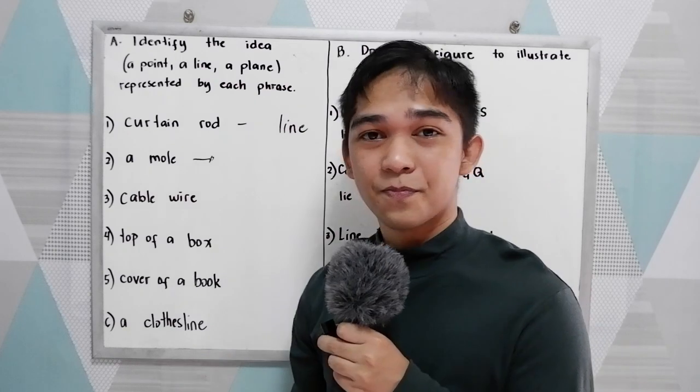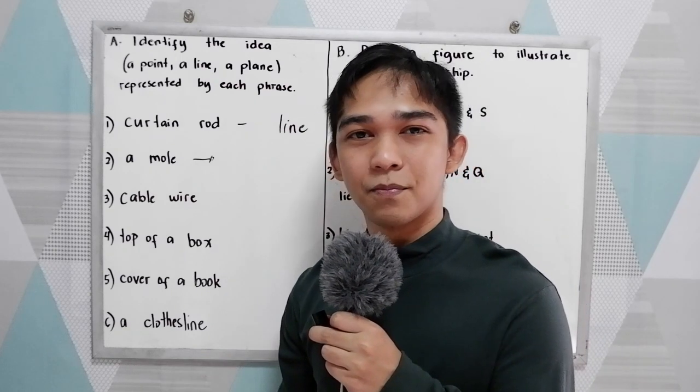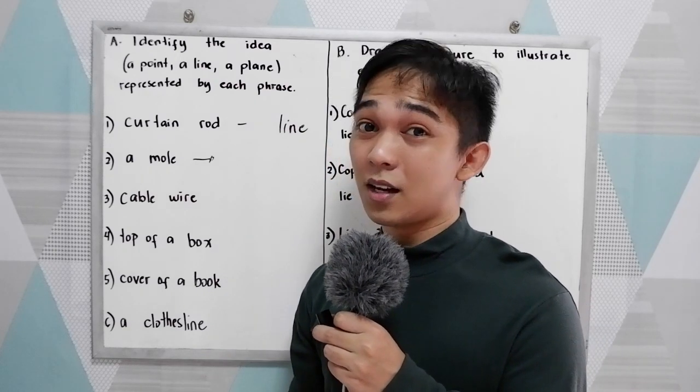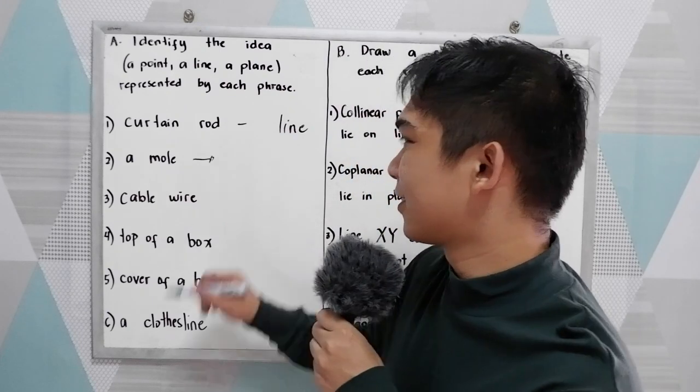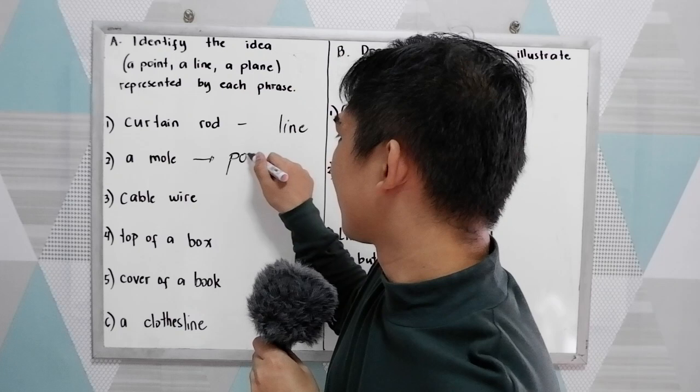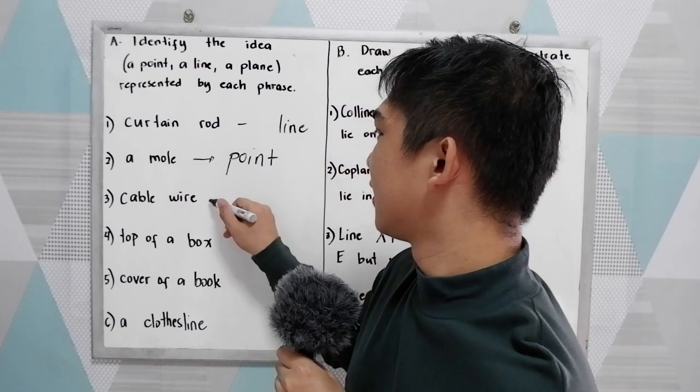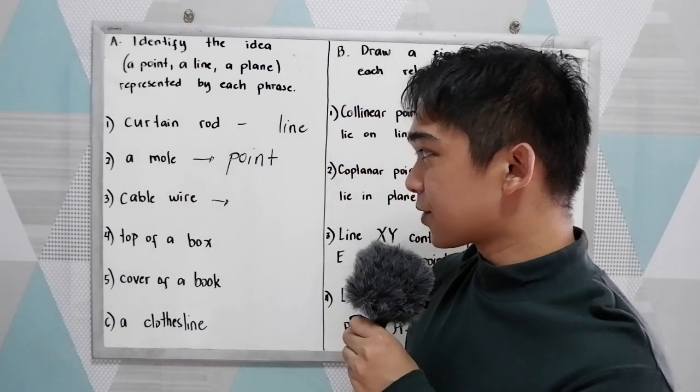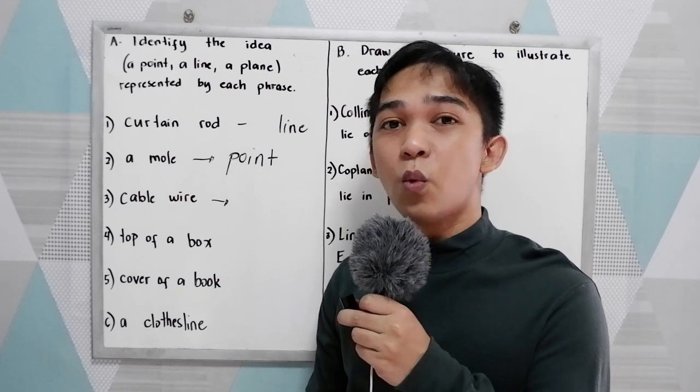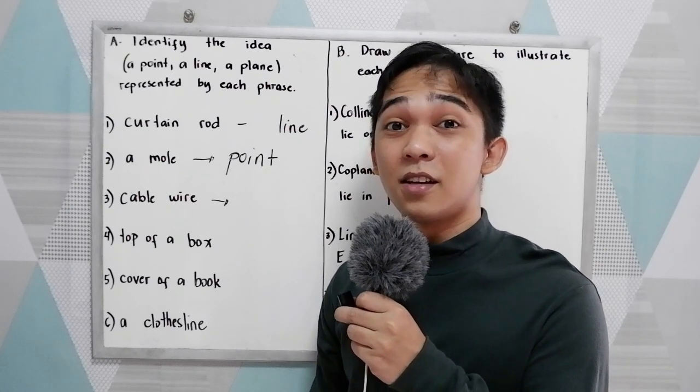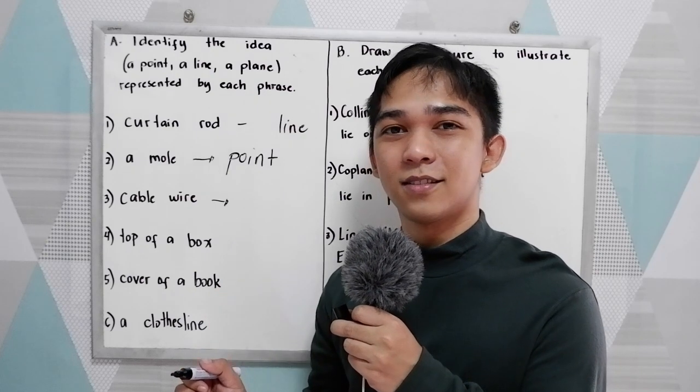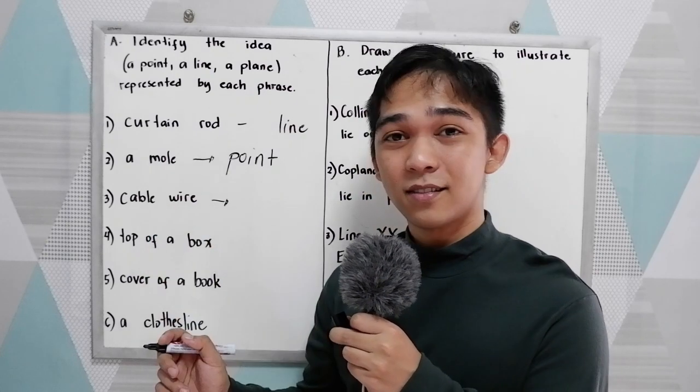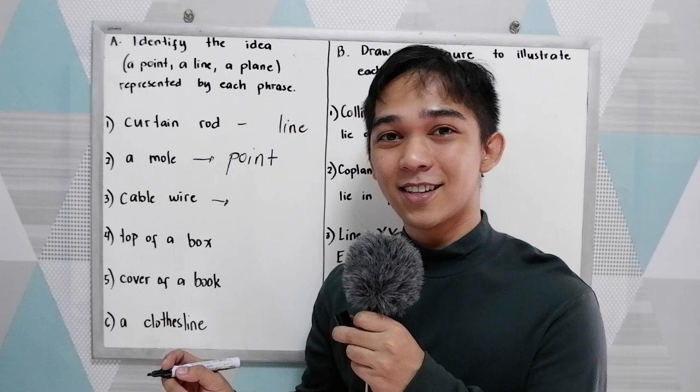Next, number two, a mole. A mole is an example of a point. Next, cable wire is an example of a point, line, or plane. Wire, that is a line.